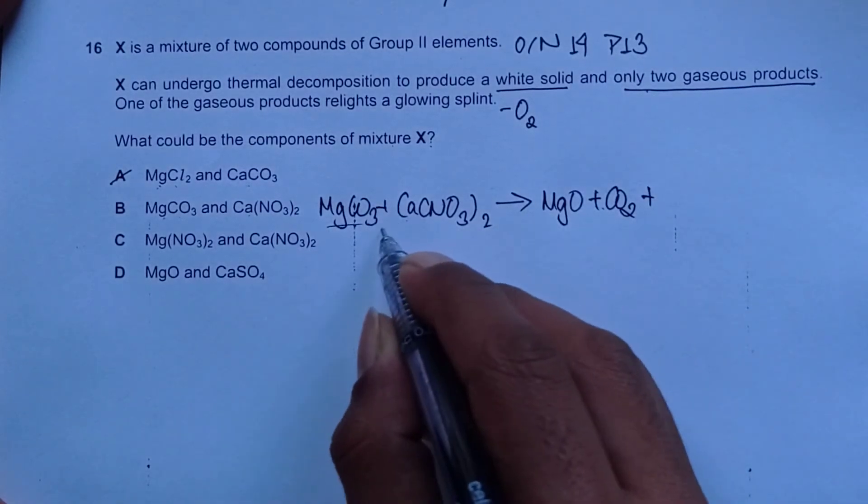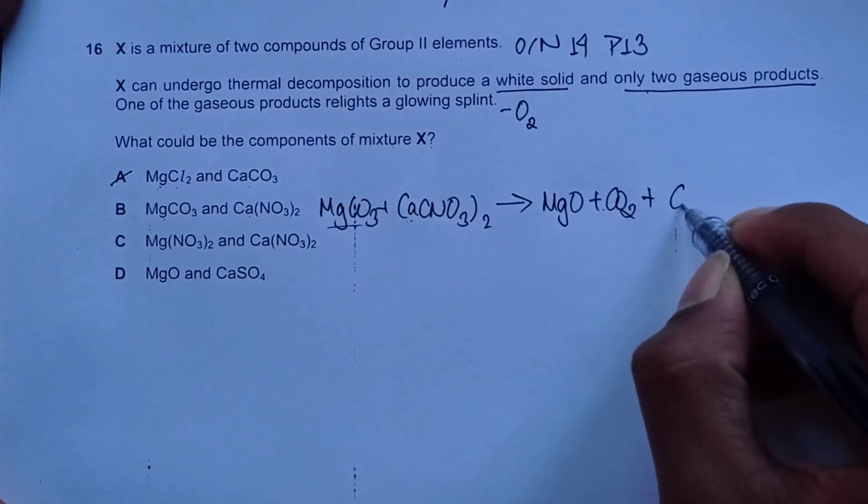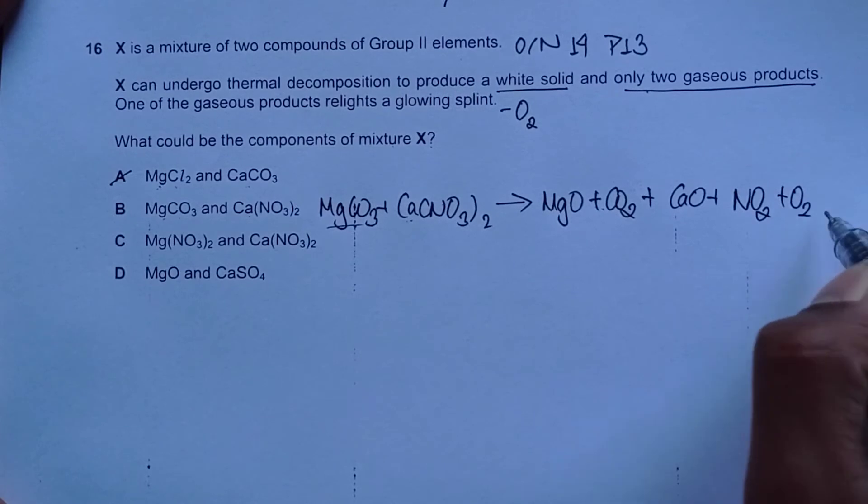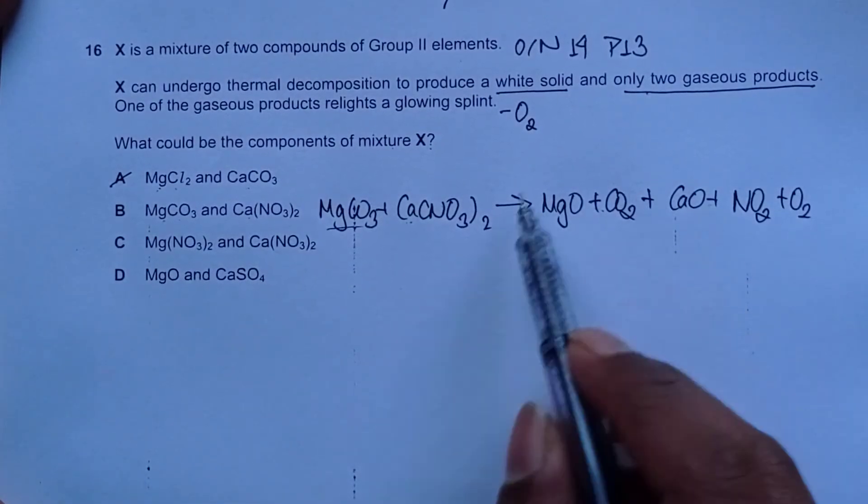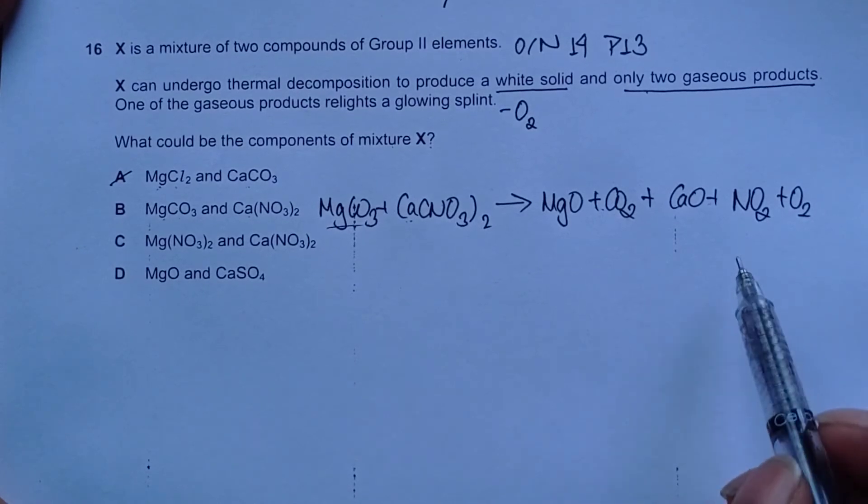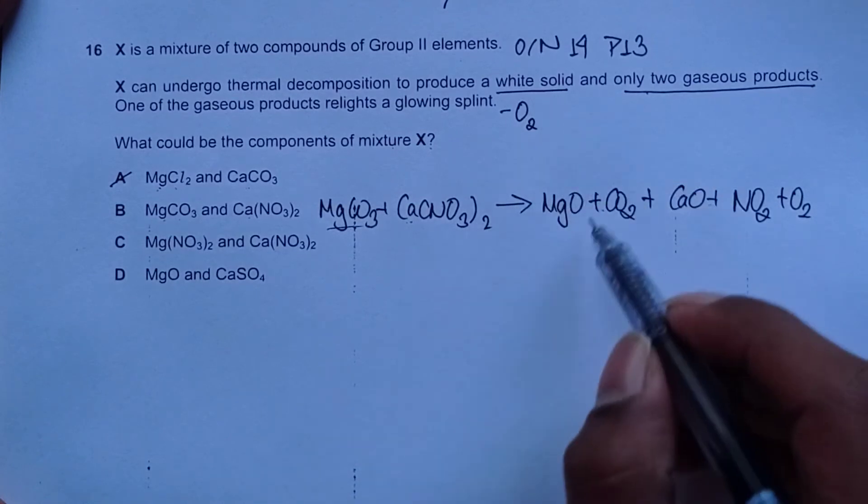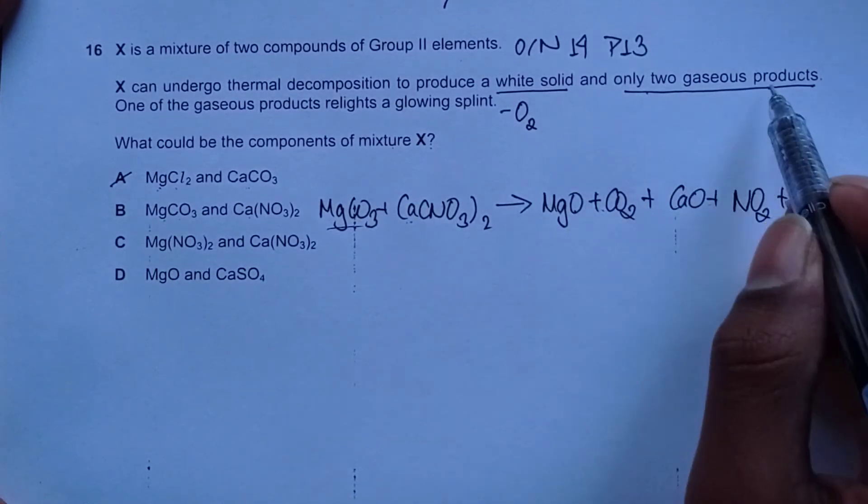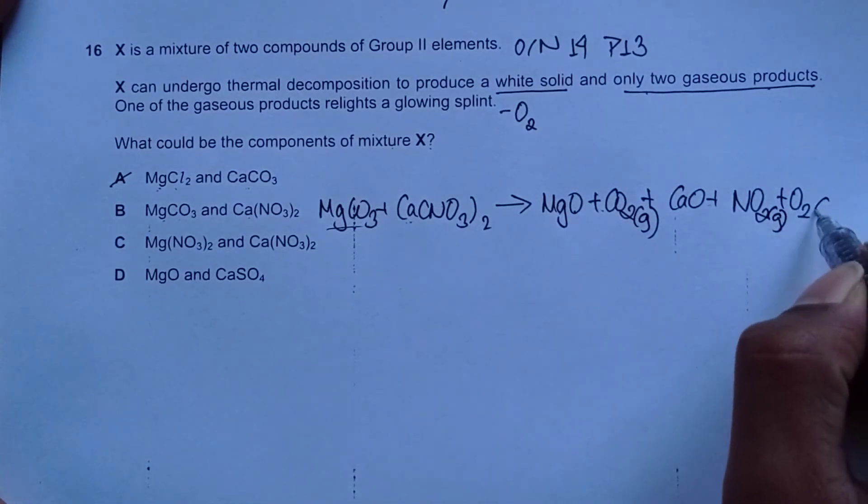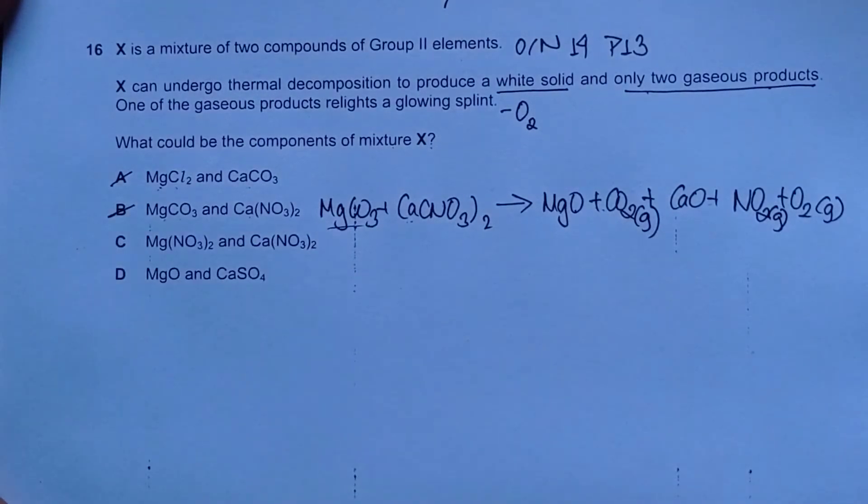This is dealt with and now for this, we will have calcium oxide, nitrogen dioxide and oxygen. The equation is not really balanced and it's not necessary to balance the equation for the sake of this question. Why is this option incorrect? Because we have white solid and only two gaseous products, but carbon dioxide is a gas, nitrogen dioxide is a gas and oxygen is a gas. Three gaseous products, that means choice number B is incorrect.